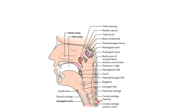Inferiorly it communicates at the lower border of the sixth cervical vertebra posteriorly. Posteriorly is the prevertebral fascia in front of the cervical spine. The pharynx is separated from the prevertebral fascia only by a loose layer of areolar tissue, which allows the pharynx to slide freely on the fascia during swallowing. Anteriorly it opens into the nasal cavities, mouth, and larynx. Laterally there is the neurovascular bundle of the neck and the styloid process with attached ligaments.